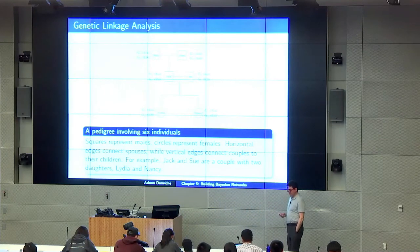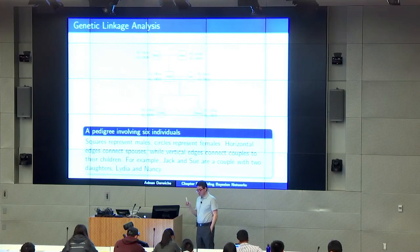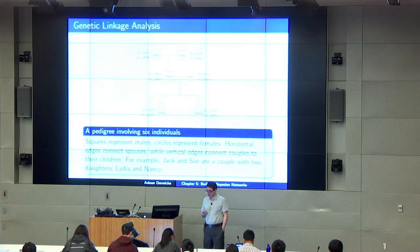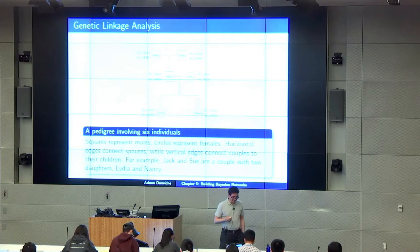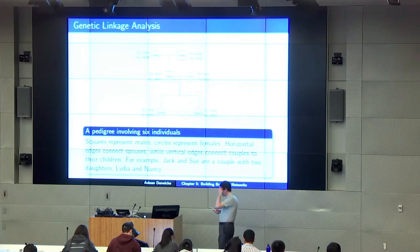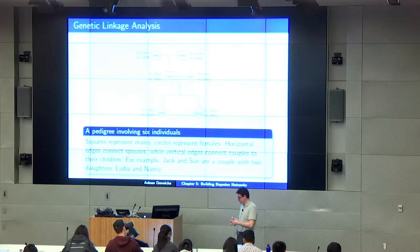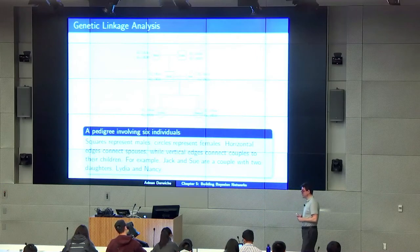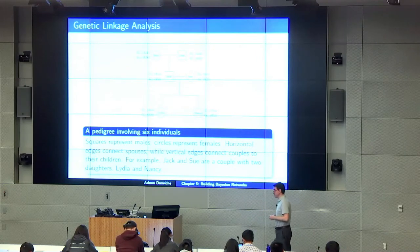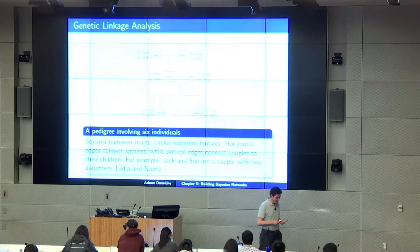Let's continue with our lecture. There was one more example that I skipped from common sense reasoning, but you can read that in your text — it's about a story involving a robot with sensors. That's more of a traditional storytelling where building the network is done based on intuition. But I want to make sure that I get through this case study, which is the one from genetic linkage analysis that I already alluded to a number of times.